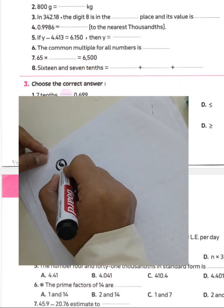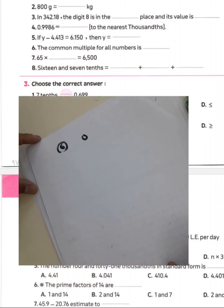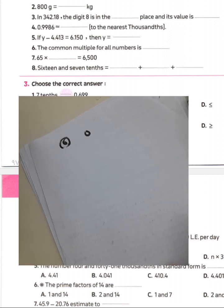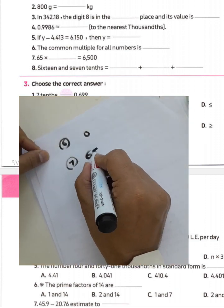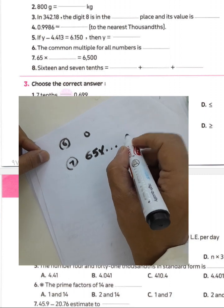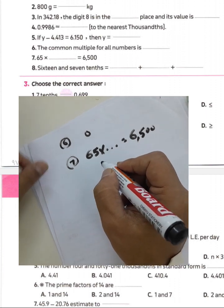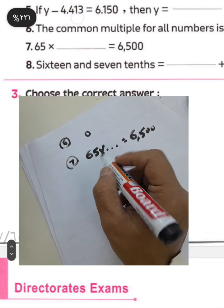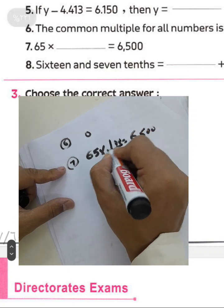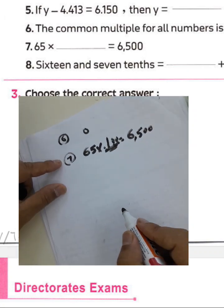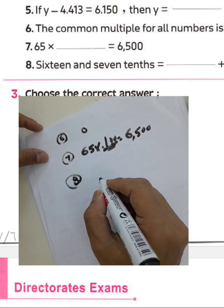Question six: the common multiple for all numbers is zero, because zero can be divided by any number. The common factor of all numbers is one. Question seven: 65 times what equals 6,500? We multiply by 100, because adding double zero behind the number means multiplying by 100.